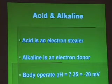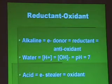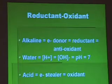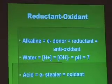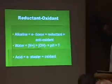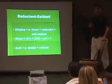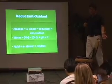An acid is an electron stealer, and alkaline is an electron donor. Alkaline is also called a reductant or reducing agent. It's also called an antioxidant. So if we give vitamin C IV, what are we doing? We're giving people electrons.